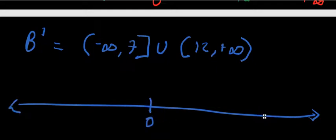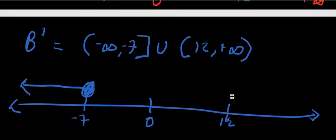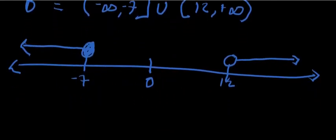We can also show this on a number line. Place negative 7 and 12 on the line. Since negative 7 is part of the answer, use a shaded circle and go toward negative infinity. Since 12 is not part of the answer, use an unshaded circle and go toward positive infinity. That represents B complement. Next we are asked to find B minus A.